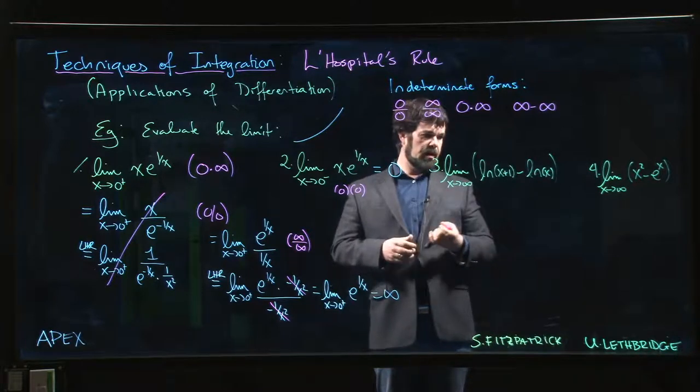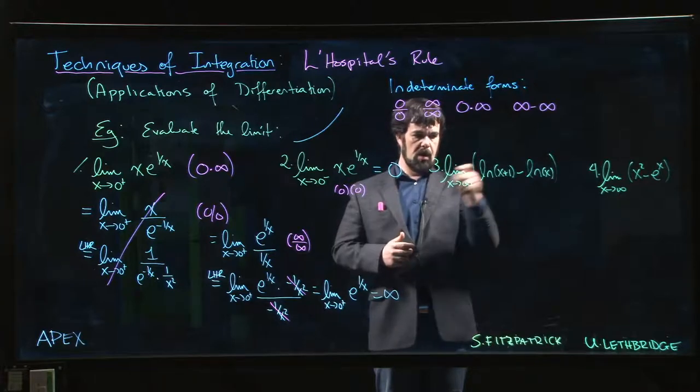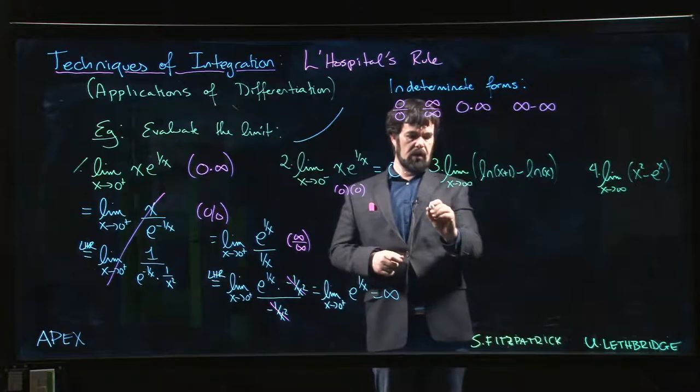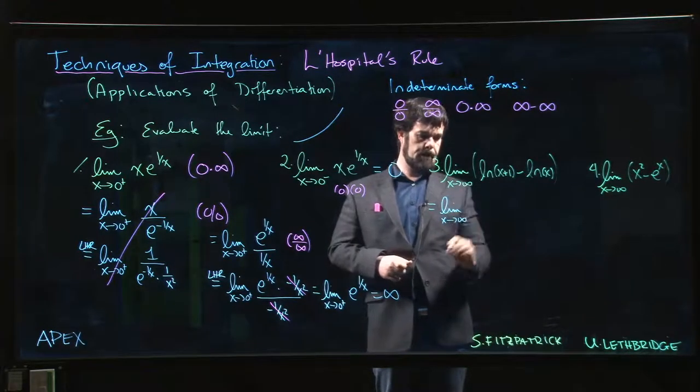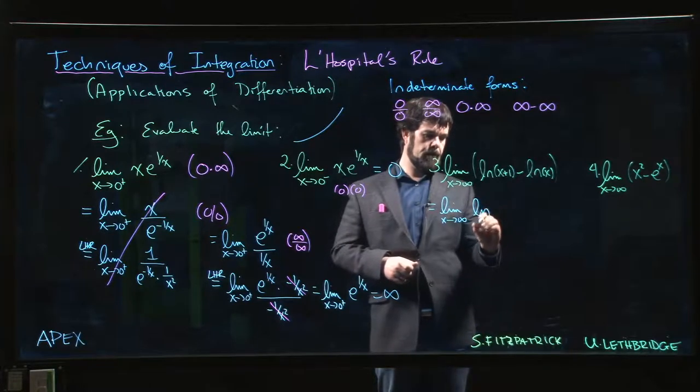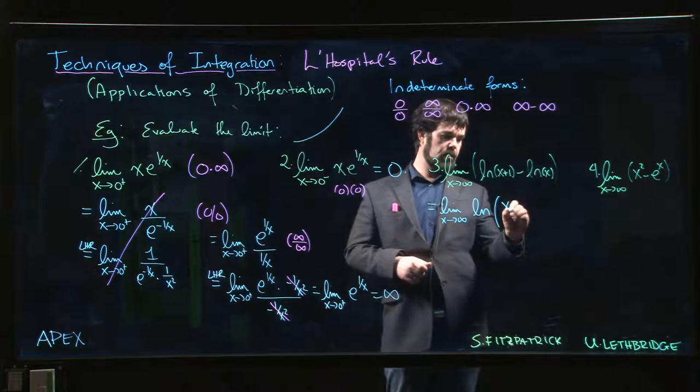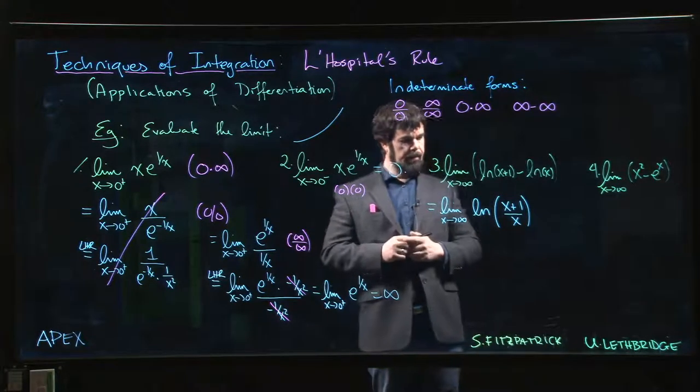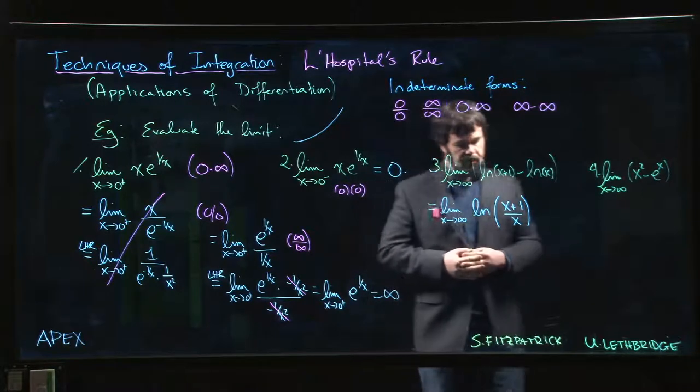In this case, we benefit from a property of the natural log. Remember that the difference of two logs can be rewritten as a single log of a quotient: (x+1) over x. Now from here, we could proceed...